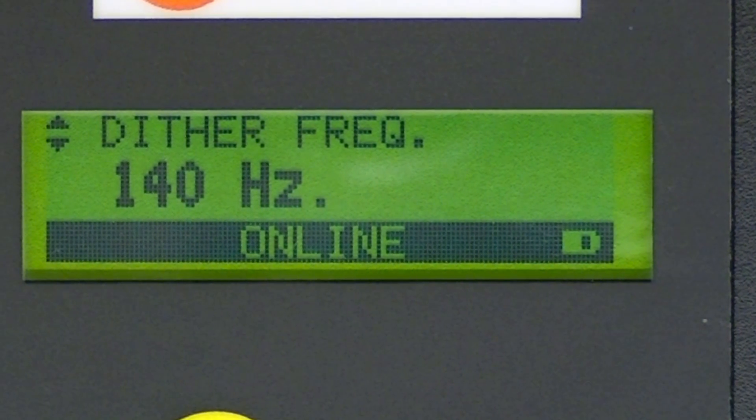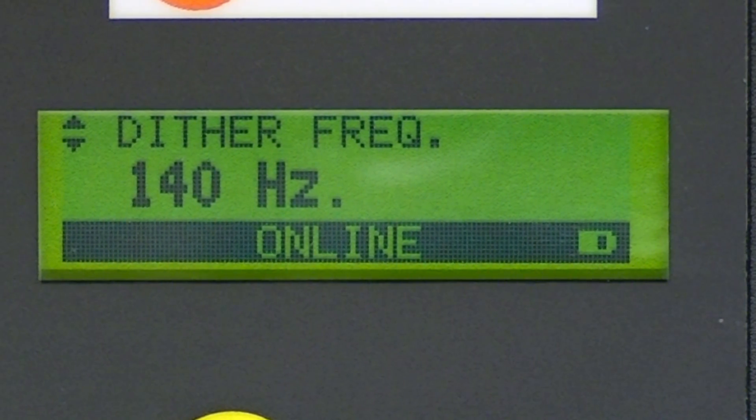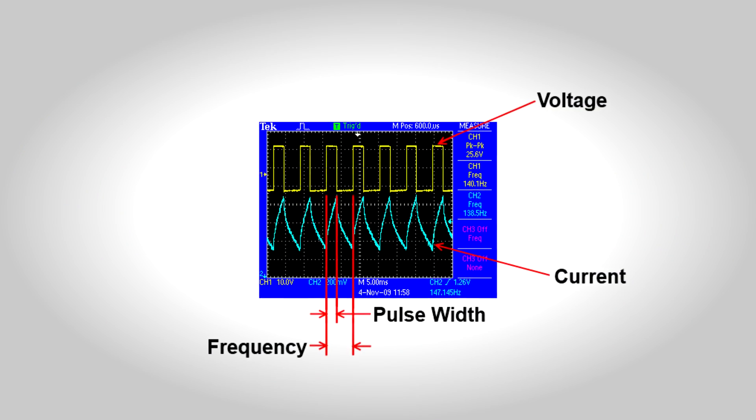What you're doing when you're changing the dither frequency is you're changing the frequency of the pulse width modulation of the output signal.